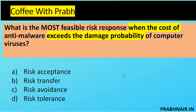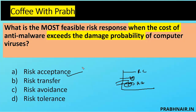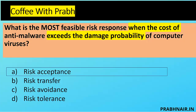The closest option is risk acceptance. When the cost of the risk response — implementing the solution — exceeds the damage probability of the virus, the viable option is risk acceptance. The current risk may be within the tolerance level, and to bring it lower we implement controls; but when it's already manageable, we accept the impact. If damage exceeded risk capacity we would avoid the system, but the question focuses on cost exceeding damage probability. The answer is risk acceptance.